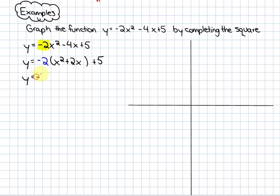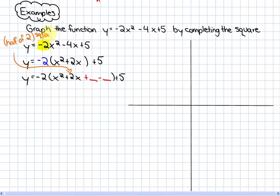So in order to do that, we need to add and subtract the same value in order to not change the value of the expression or the function. In this case, that value will always be, or in this particular case, it's always half of the linear term squared. So it's half of 2 squared, which half of 2 is 1, and 1 squared is 1. So that value here is going to be 1.